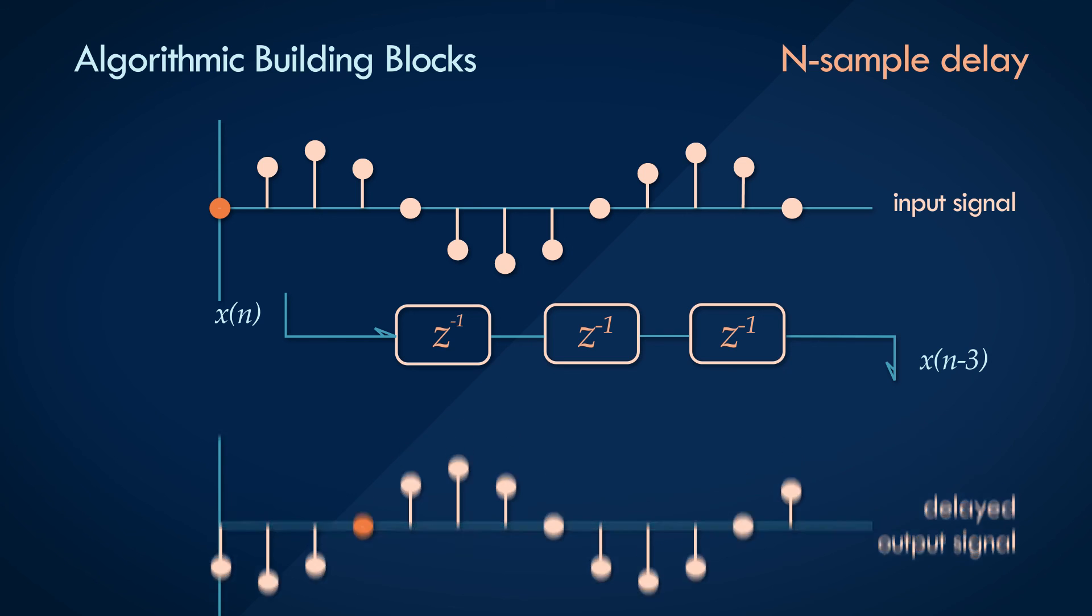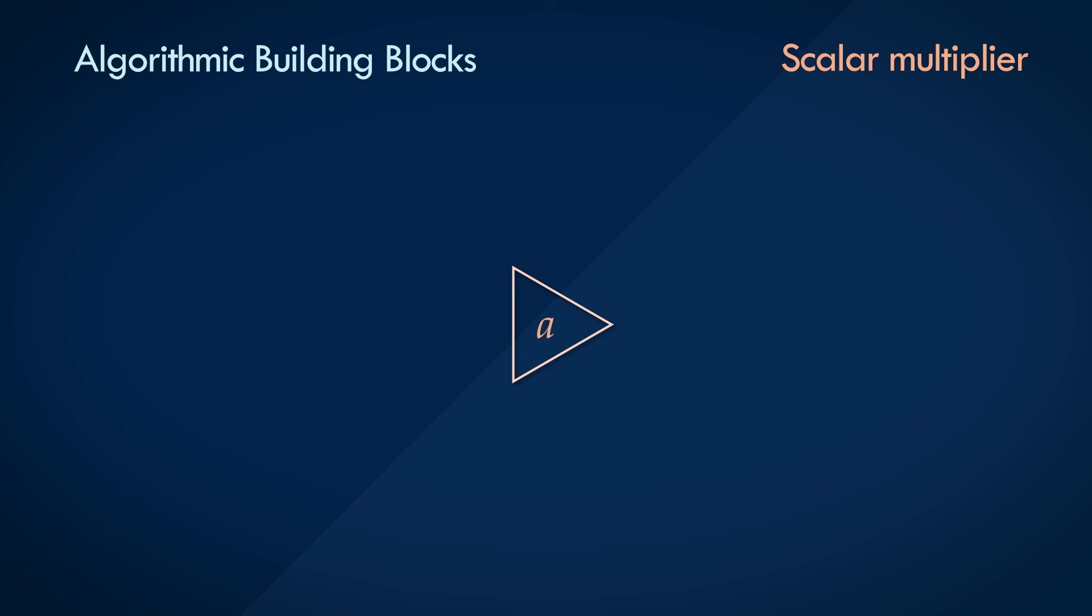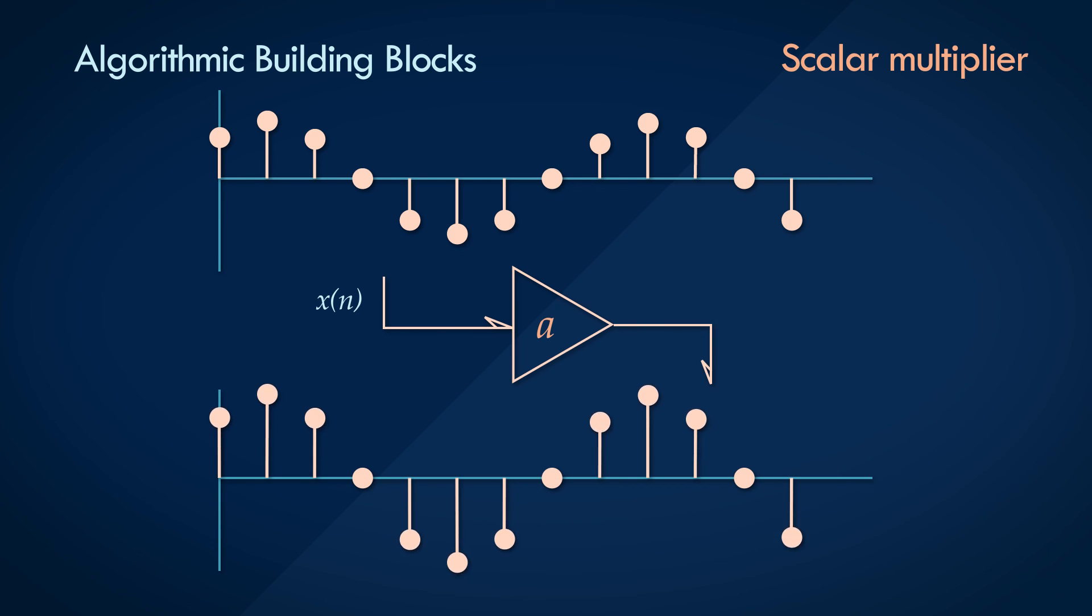The next algorithmic building block is the scalar multiplication operation. It is a sample by sample operator that simply multiplies the input samples by a coefficient. The multiplication operator is used in just about every DSP algorithm. The symbol for scalar multiplication is a triangle, which in electronics is an amplifier. In fact, the multiplication operation can be thought of as amplification. The outputs are simply scaled versions of the inputs. Notationally, if an input signal x(n) passes through a multiplier block with a coefficient of a, the scaled output signal would be a times x(n).